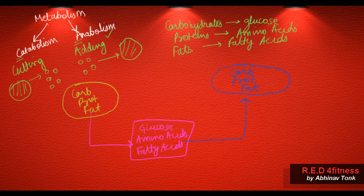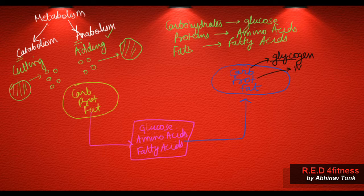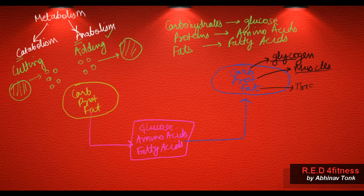Let's say for carbs you are eating pasta. When you eat pasta, it is not stored as pasta in your body. For protein, if you are eating egg whites, egg whites are not stored in the body as egg whites. They are first broken down into the component level and then built up in the right configuration. Carbohydrates are stored as glycogen — that is the right configuration of carbohydrate in the body. Protein is built up as muscles — muscle is the right configuration for protein. Fat is built up as body fat, or triglycerides.